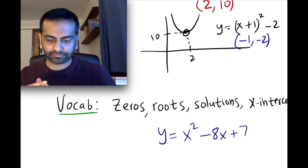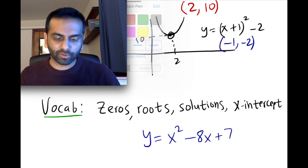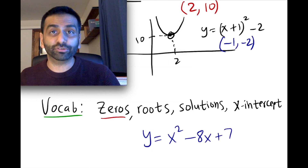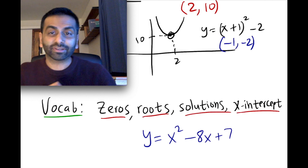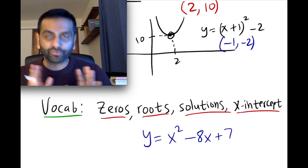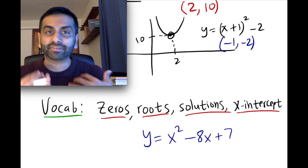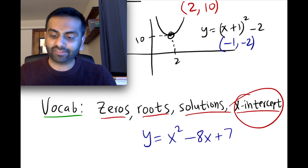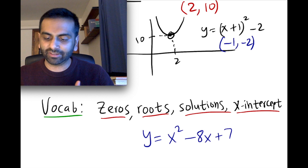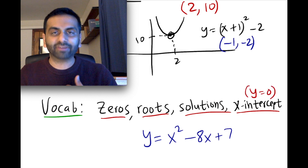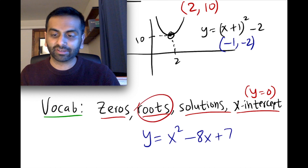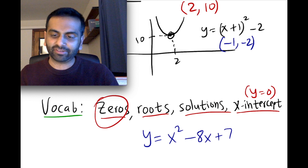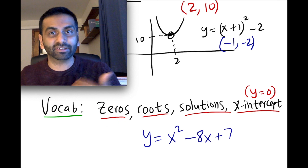Some vocabulary words you'll often encounter: the zeros of a parabola, the roots of a parabola, the solutions of a parabola, or the x-intercepts of a parabola. All four of these words are synonyms — they mean the same thing. The x-intercept is the x value when y is 0. So if I say find the solutions, find the roots — nothing to do with square root — or find the zeros, you just set y equal to 0 and solve for x.